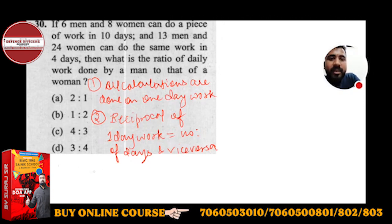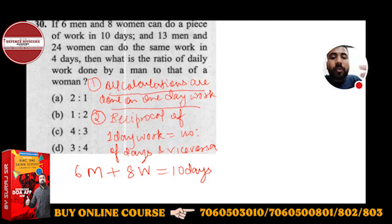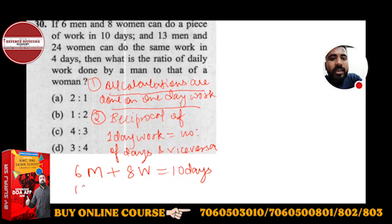In the solution, observe carefully: 6 men (M) plus 8 women (W) — if they work together, they complete the work in 10 days. This is one condition. But I cannot do calculations with the total number of days directly, because all calculations are done on one day work.